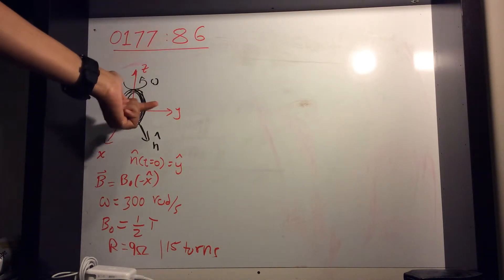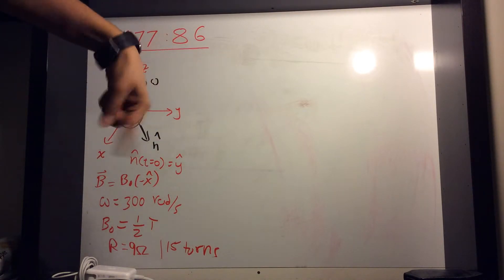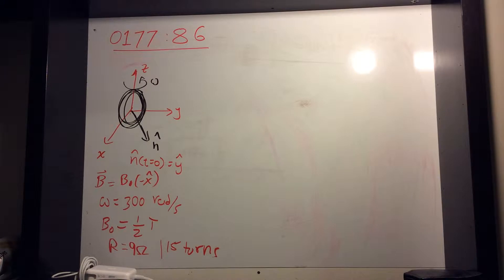So the normal vector at time zero is along the y direction, and then it rotates with frequency omega, which is 300 radians per second.